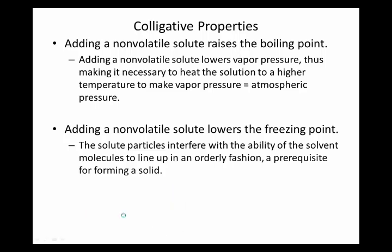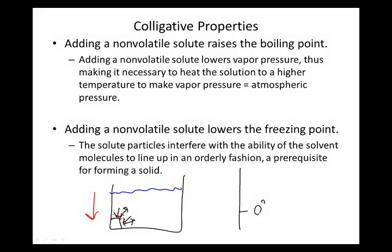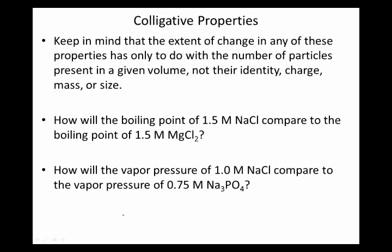So to summarize: adding a non-volatile solute lowers vapor pressure, raises boiling point, and lowers freezing point. The way I remember how it affects the boiling point and the freezing point is: water freezes at 0°C and boils at 100°C, and adding solute will increase that upper bound and decrease that lower bound. It effectively extends the range in both directions over which the solvent remains liquid.